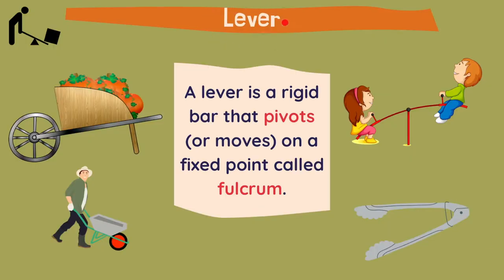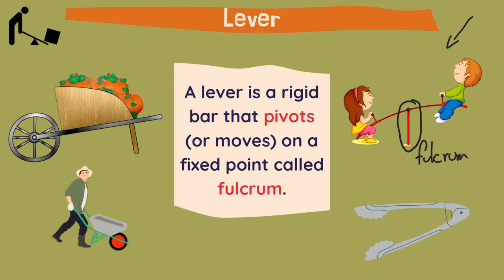First, the lever. A lever is a rigid bar that pivots or moves on a fixed point called the fulcrum. In this image we have here in the middle the pivot point which is the fulcrum, and on the two sides we have the different forces going up and down. This is one type of lever with the fulcrum in the middle.